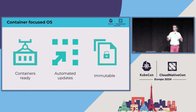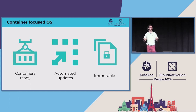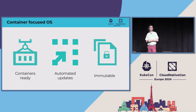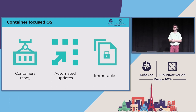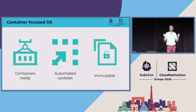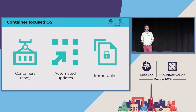Container OSes benefit from an automated updates feature, which means once you've deployed a container OS, you can forget about updates. In contrast to general-purpose distributions where you need to manually upgrade, with container OSes it's up to the release itself to push the new release into the system — so every two weeks or every month you get a new update. It's really nice in terms of security and reducing technical debt.